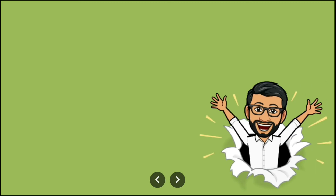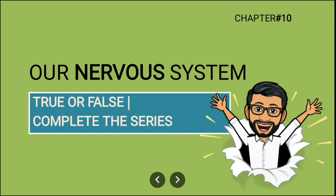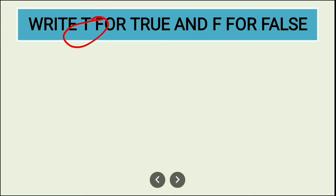Hello students, I hope all of you are fit and fine. Today we are going to discuss some questions from the exercise. We will be solving true or false and complete the series from the chapter 'Our Nervous System.' If the statement is true, write T, and if the statement is false, write F.